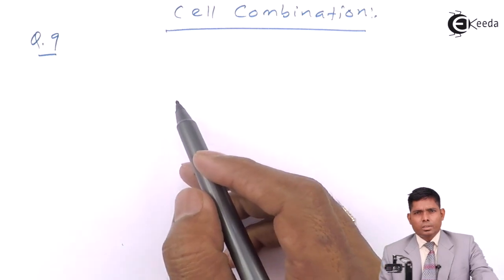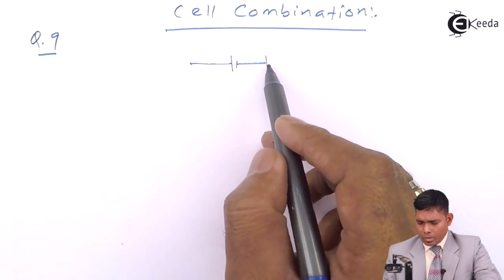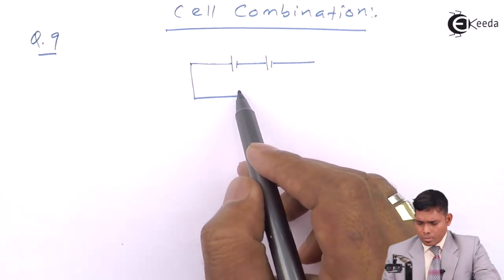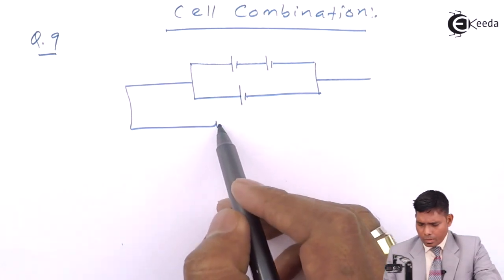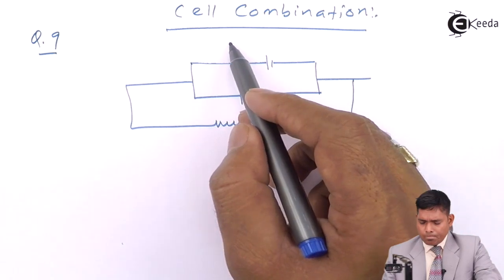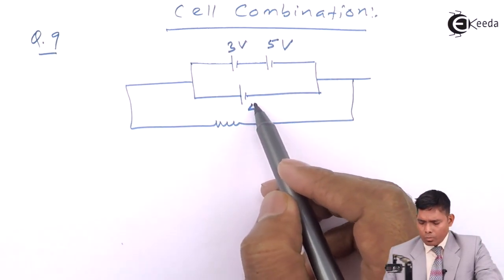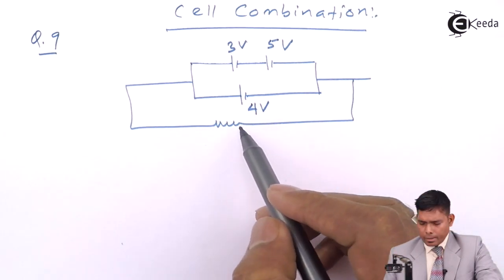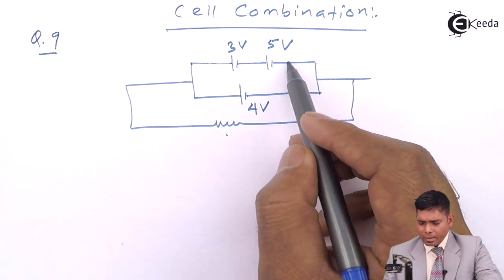Suppose we will consider cells like this, one more here, one more here. So this is 3V, 5V, 4V, and this is having internal resistance.